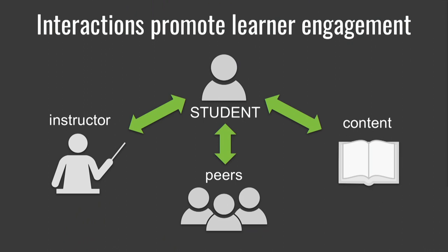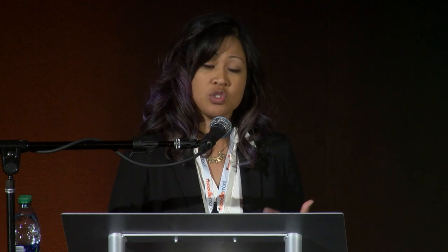Interactions within an online course are supremely important in supporting learner engagement and good student outcomes. There are three main types of interaction that can occur in an online course. You've got student-to-instructor interaction where there is instructor presence, feedback, and communication that enables the student to understand how they're doing in the course, track their progress, and feel connected with an actual instructor even though they don't physically interact as they would in a face-to-face course. There's also student interaction with their peers, which has been shown to be very effective in helping students stay engaged.